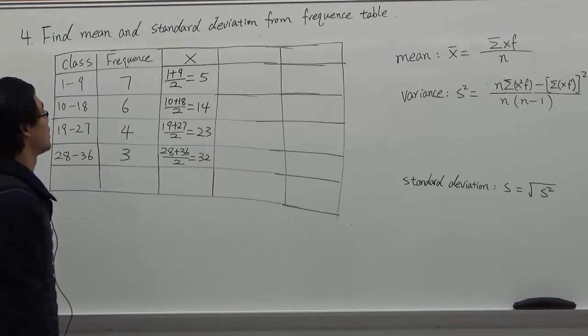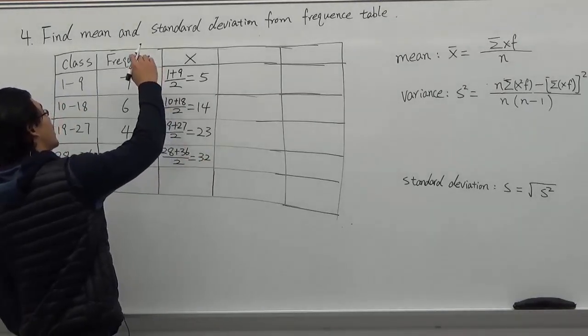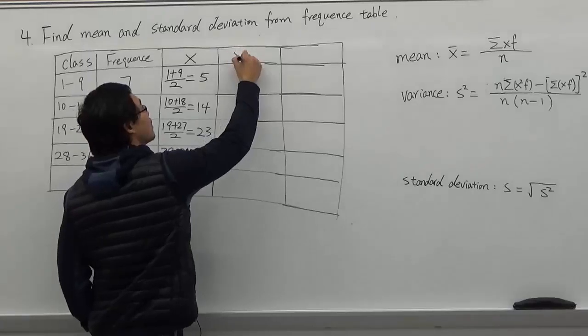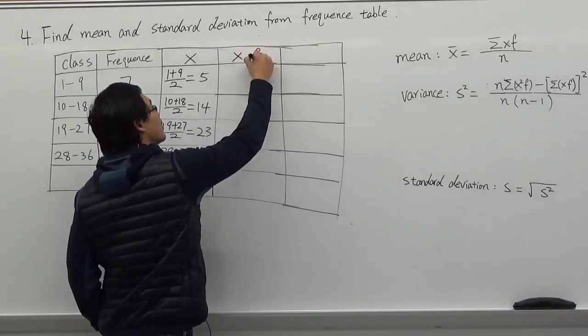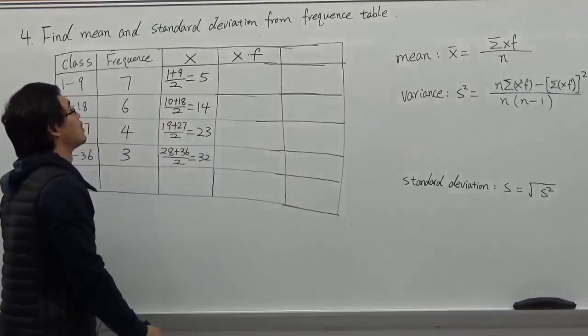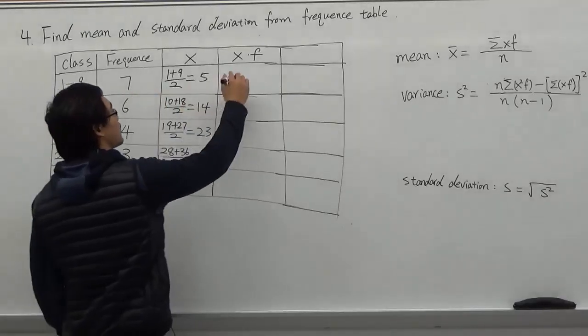And then we multiply the midpoint and frequency. So 7 times 5. And then we put it in the midpoint side.